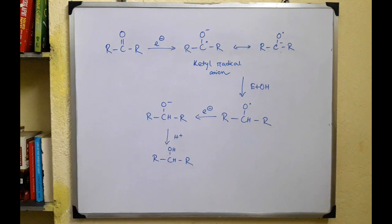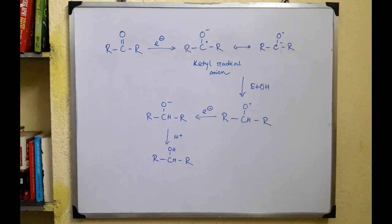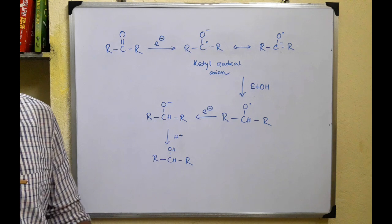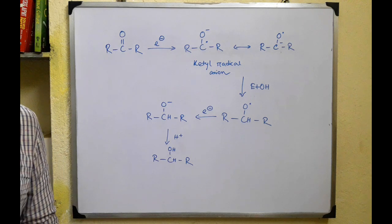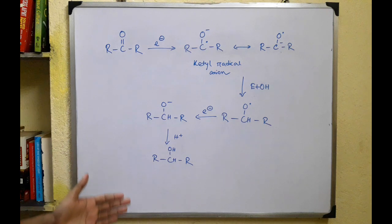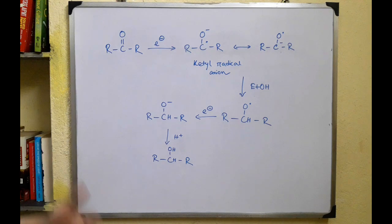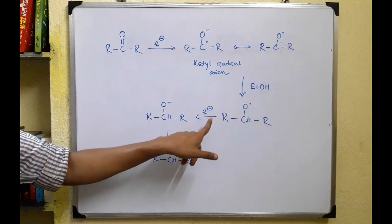It is important to note that we are using sodium metal in ethanol, not sodium ethoxide — sodium ethoxide is the final product once sodium has fully dissolved in ethanol. In this reaction, sodium metal is dissolving as the reaction takes place, which is why free electrons are available for the reduction.